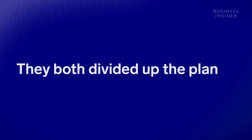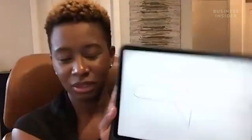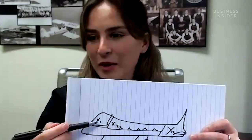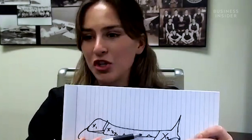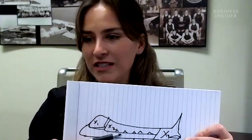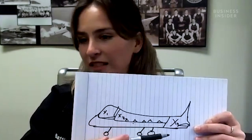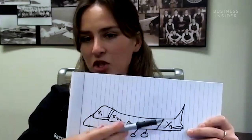I'm now attempting to draw a plane — I'm such an architect, I've gotta get it right. So you have the cabin, which is X1; X2 is where the passengers go with all the seats; and X3 is the undercarriage down here — just where all the luggage goes.